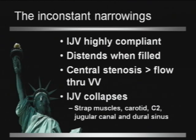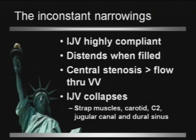There are many inconstant narrowings, and that's because the jugular vein is so highly compliant and distends when it's filled. But if there's a central obstruction, it doesn't distend because the flow is bypassing the jugular vein, or the majority of it is going into the vertebral system and other collaterals. So you have this underfilled, very collapsible structure, and there are narrowings that really just represent underfilling. In those situations, my experience is that the jugular vein appears to narrow physiologically in several distinct and reproducible areas — one is at the strap muscles, relatively low down.